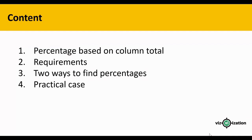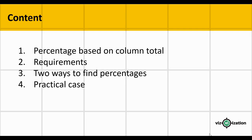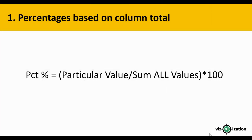Percentages based on column total — what you're seeing here is a basic formula. We have the particular value as the numerator and the sum of all values as the denominator, and then this result should be multiplied by 100.